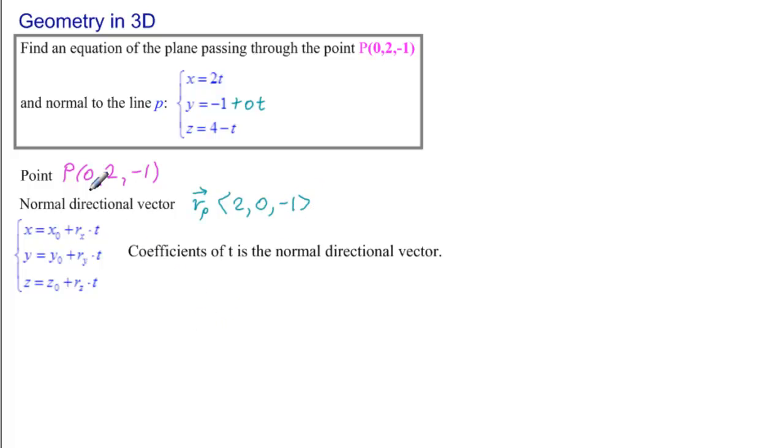So now we have a point and a normal directional vector. Our formula for the plane is where a, b, and c are the components of the normal directional vector. So our plane is 2 times (x - 0) plus 0 times (y - 2) minus 1 times (z - (-1)) equals 0.